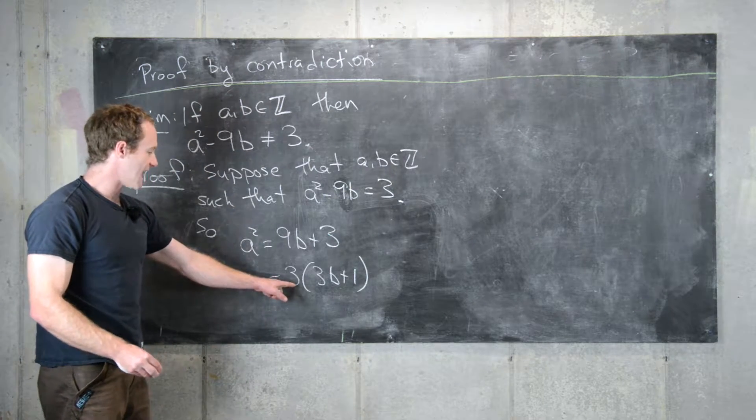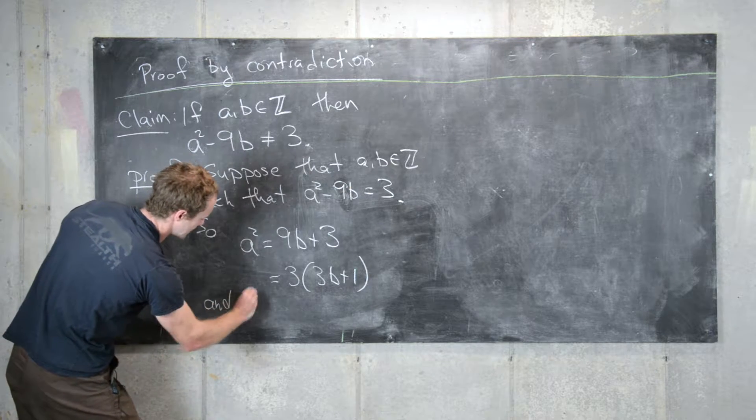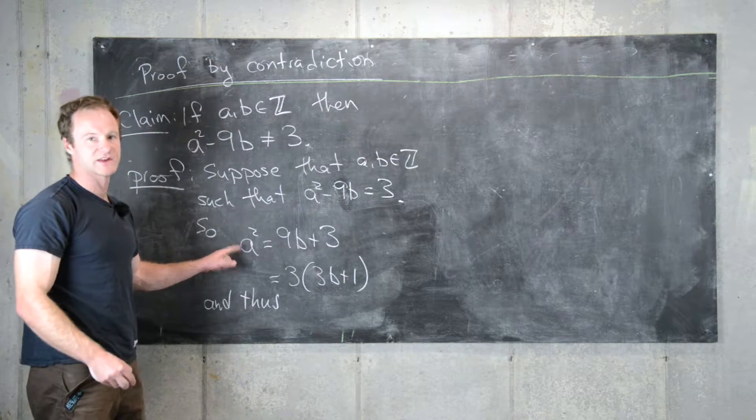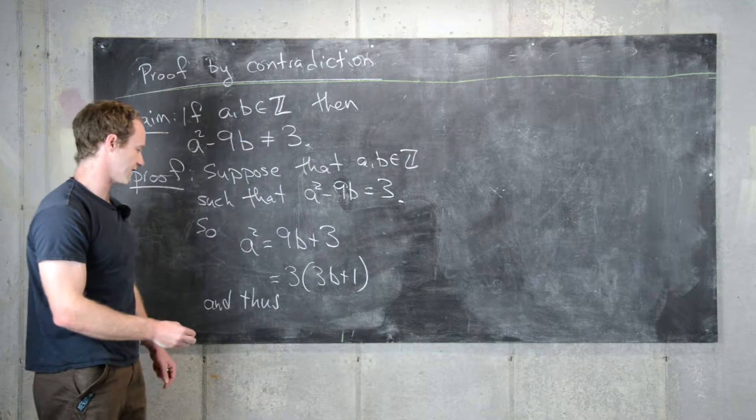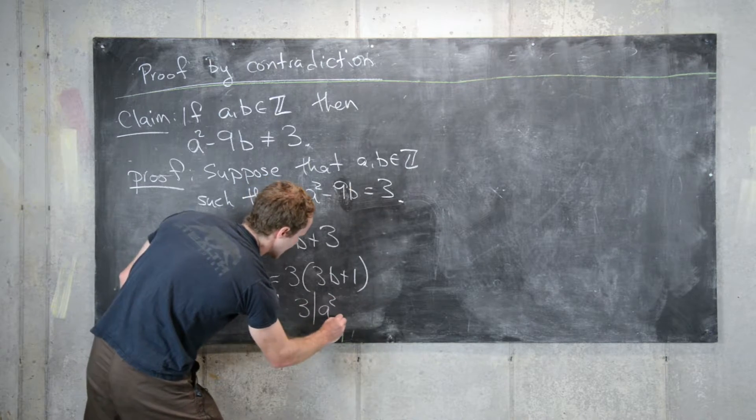And now notice, that means that the right-hand side is a multiple of 3, and thus the left-hand side is also a multiple of 3. So that means that 3 divides a squared.